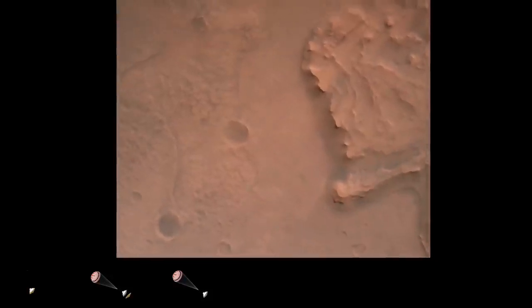Nav filter converged. Velocity solution 3.3 meters per second, altitude 7.4 kilometers. Now has radar lock on the ground. Current velocity is about 100 meters per second, 6.6 kilometers above the surface.